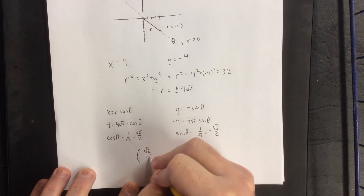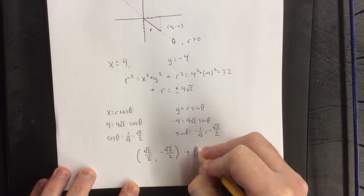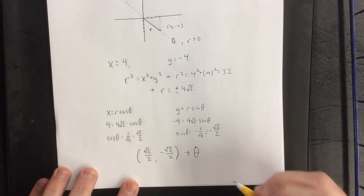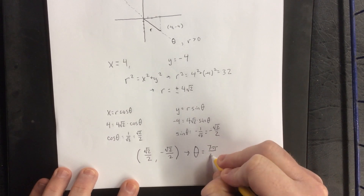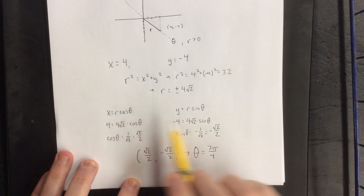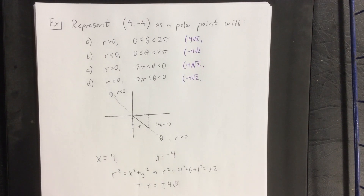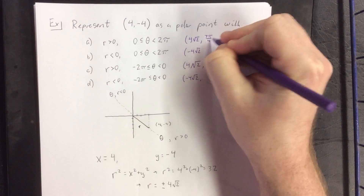That means the corresponding angle we're looking for is associated on the unit circle with positive root 2 over 2 and negative root 2 over 2. Within the first full revolution of the unit circle, that angle is going to be 7π/4. That was assuming the value of r is positive, so only one of these representations uses that angle — the first possibility, 7π/4.